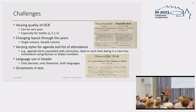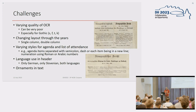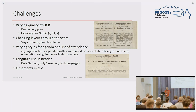So what were the challenges? Especially the varying quality of the OCR — it can be very poor, especially for Gothic script, because letters like S, F, T, and sometimes K were mixed up. Then there were changing layouts through the years, from one column to two columns, changing languages, and varying styles of the agenda — sometimes one paragraph separated with dashes, sometimes with semicolons, sometimes one item per line. And also whether the agenda was in both languages or just one. Furthermore, ornaments in the text were really hard for the OCR, because it always OCR'd them as text.